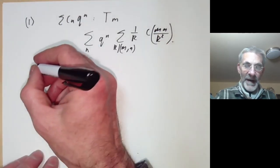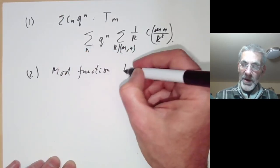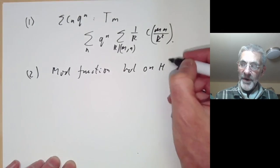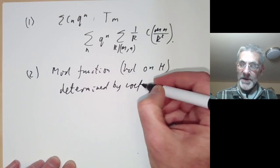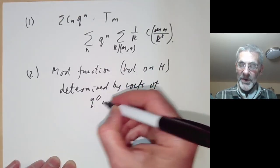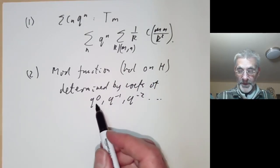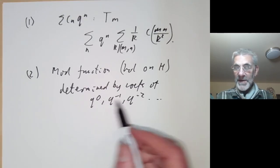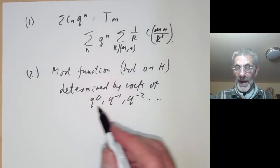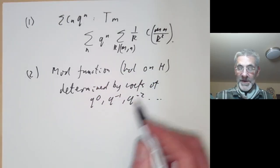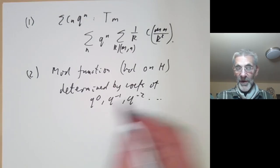The second fact we need is that a modular function holomorphic on the upper half-plane is determined by the coefficients of q^0, q^{-1}, q^{-2}, and so on — in other words just the powers of q that are ≤ 0 in its q-expansion. That's because we showed that any modular function holomorphic at infinity and on the upper half-plane is just constant.